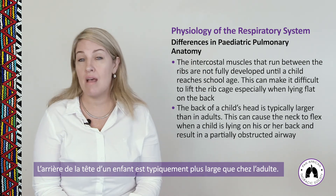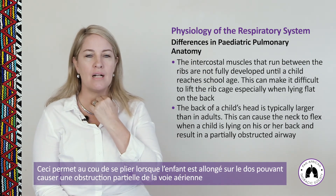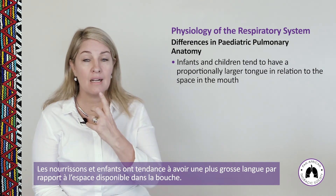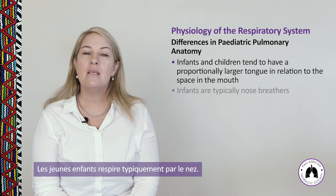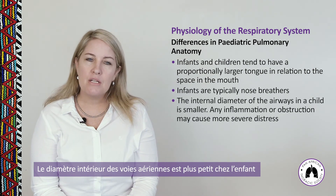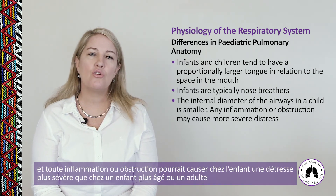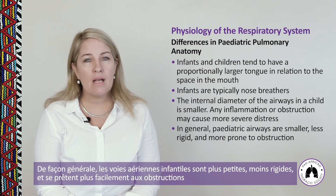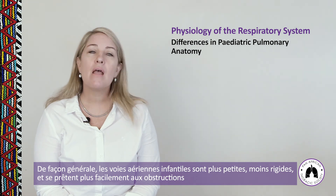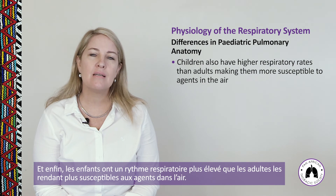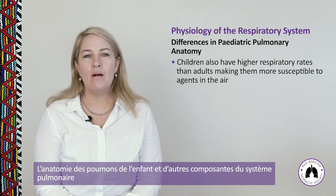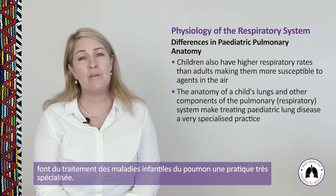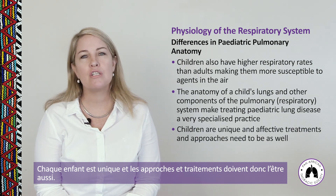The back of a child's head is typically larger than that of an adult, which can cause the neck to flex when lying on the back and result in a partially obstructed airway. Infants and children tend to have a proportionally larger tongue, and young children are typically nose breathers. The internal diameter of the airways is smaller, so any inflammation or obstruction can cause more severe distress than in an adult. In general, pediatric airways are smaller, less rigid, and more prone to obstruction. Children also have higher respiratory rates than adults, making them more susceptible to agents in the air.